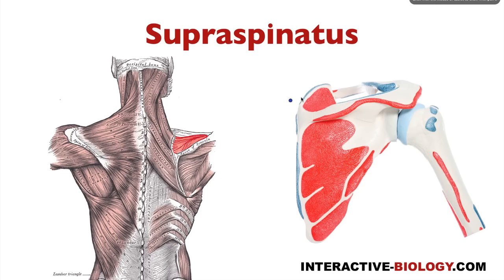Where is it going to insert? It's going to actually come through here and go under the acromion and then insert right here on the superior, or upper, facet of the greater tubercle. Remember we have the upper, the middle, and the lower facet. On the upper facet, that's where we have the insertion point for supraspinatus.